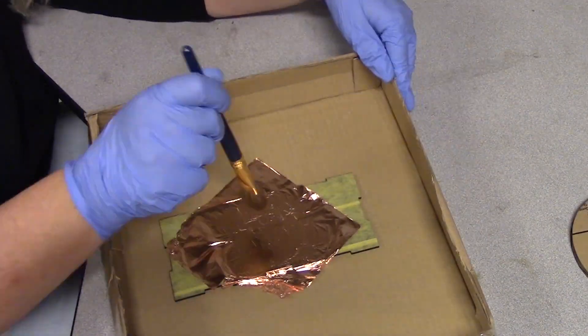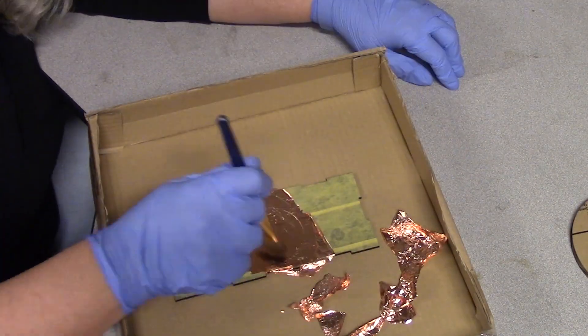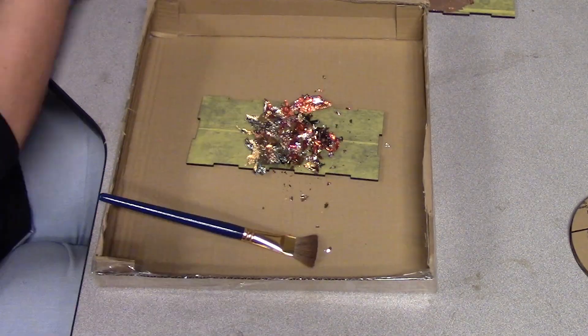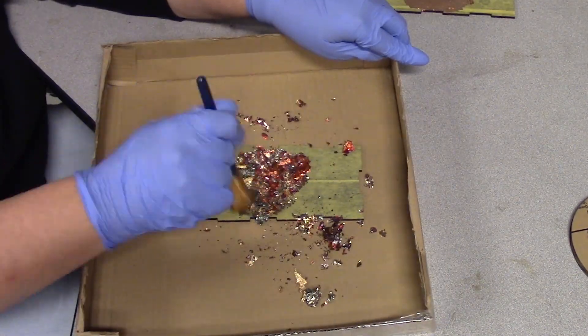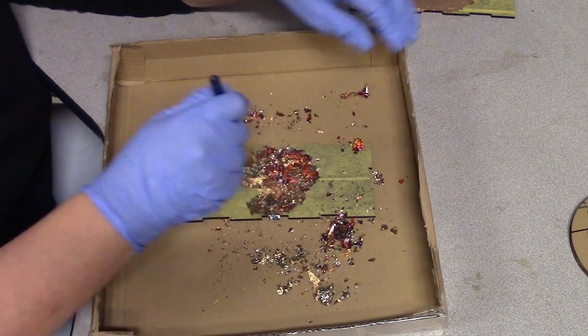I'm applying a single sheet of the Imitation Gold Leaf to the Izzet lid, and I'm putting the gilding flakes on the Selesnya lid.